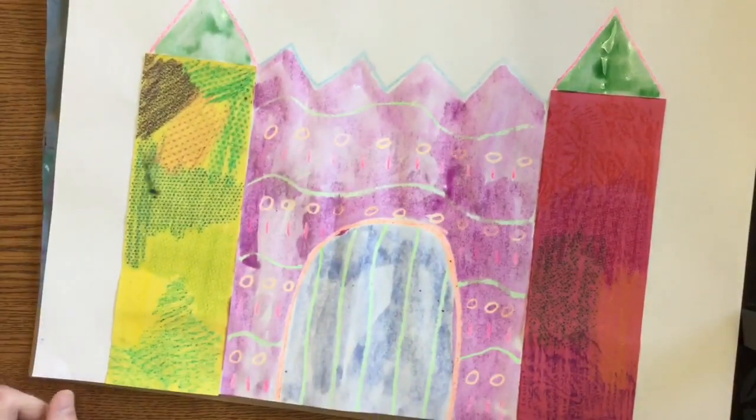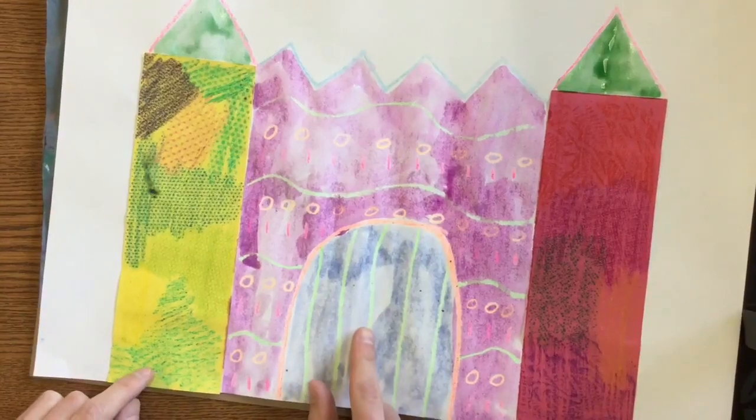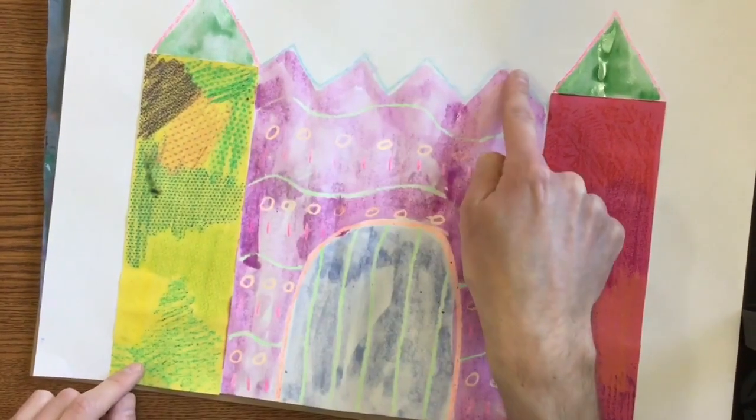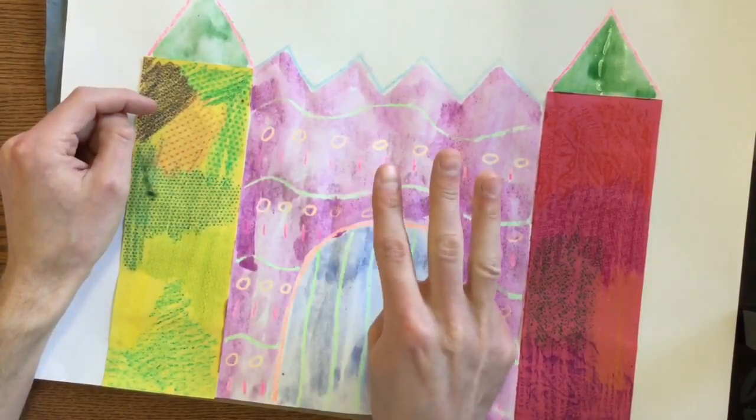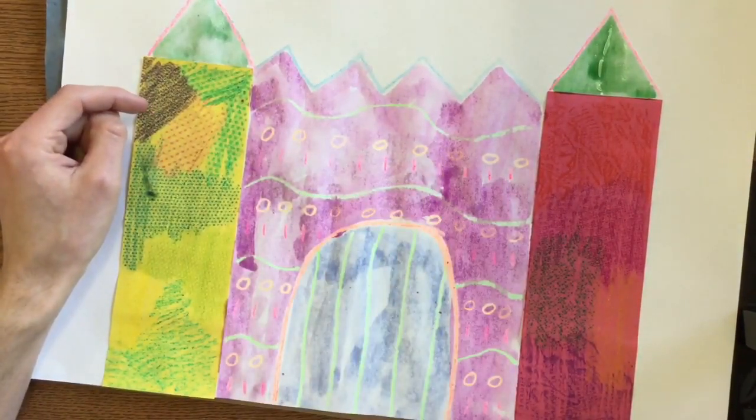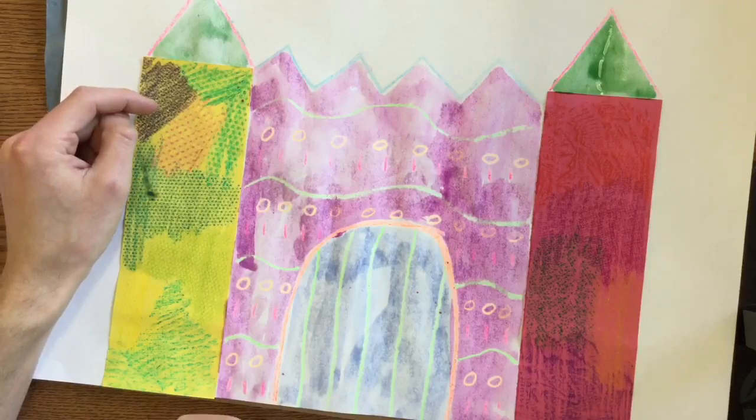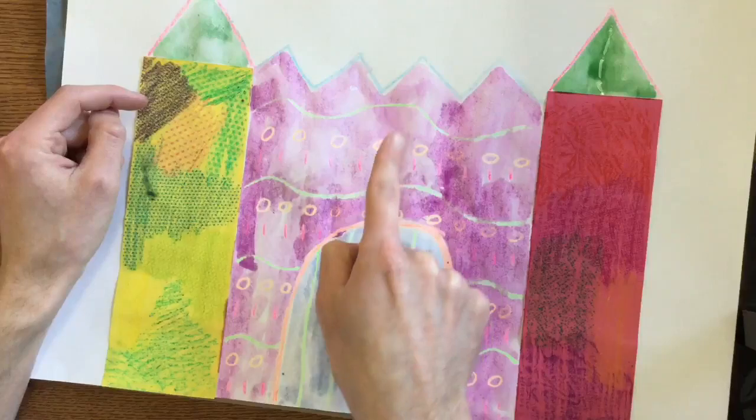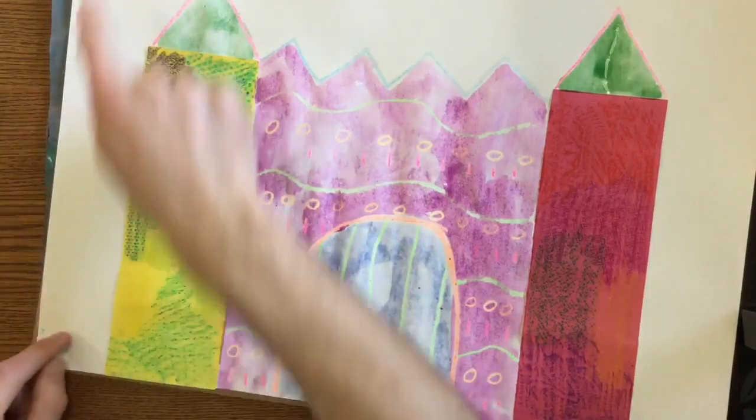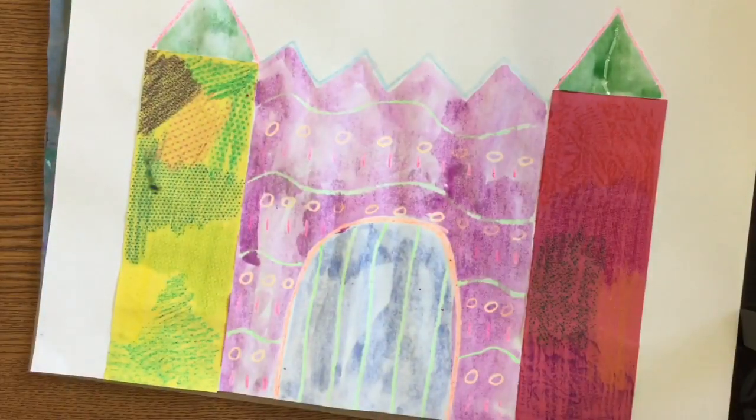So you need to start off by drawing your door, drawing the top of your castle, and drawing your two towers. Then you're adding a pattern of three different things going down your walls. Lastly, you're going to use your tempera cakes and the toes of your brush to paint in the towers, the walls, and the door. We're not going to paint the background behind it because it's going to get cut out.